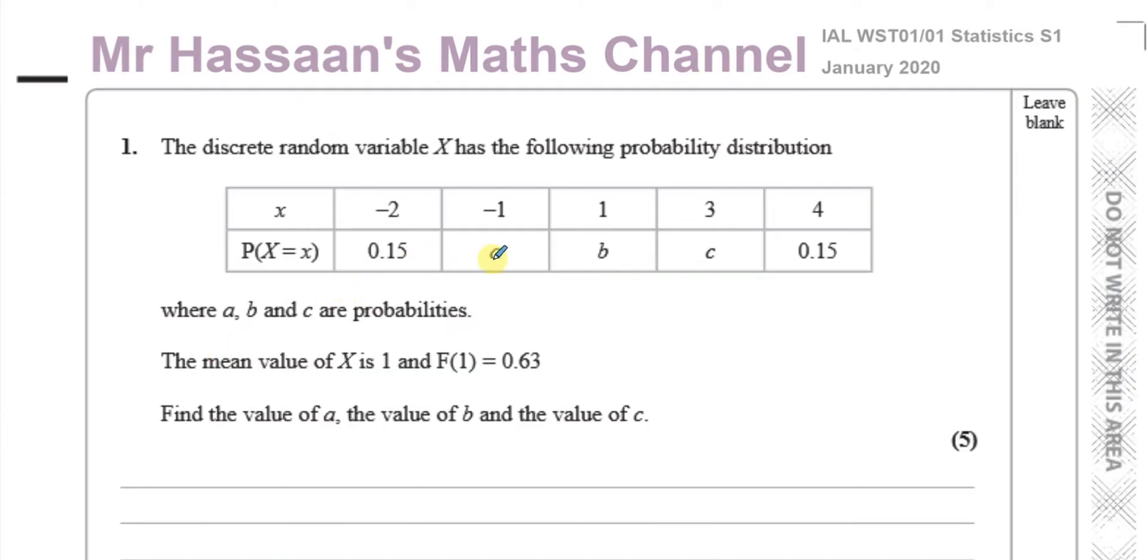We're told that the mean value of all of this is 1, and that the cumulative frequency up to 1 is equal to 0.63. Using that information, we need to find the values of A, B, and C. So if we start off with the mean value X equals 1.